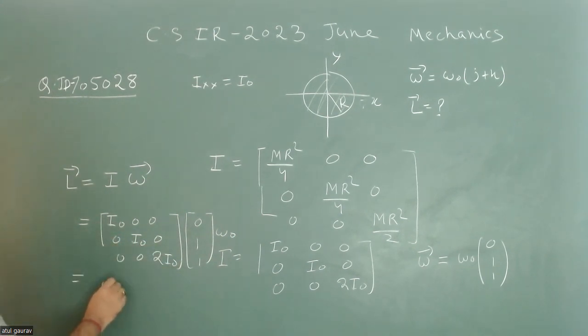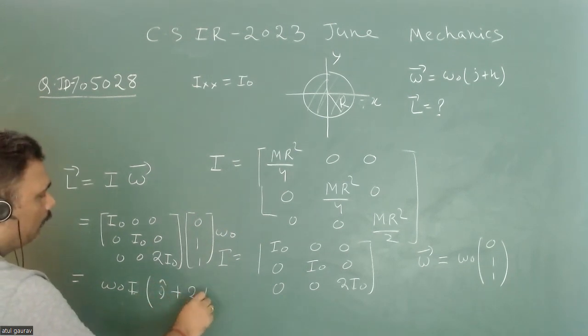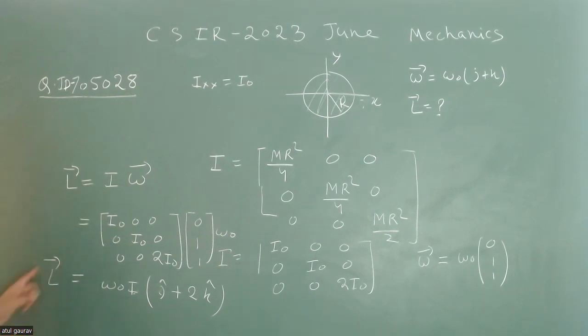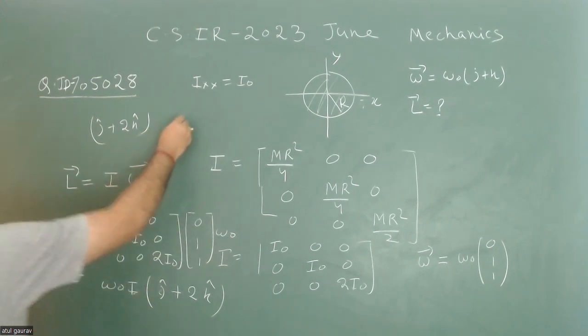This value equals ω₀I₀ times (j cap plus 2k cap). So this is my angular momentum, which is along j cap plus 2k cap direction. I think option 3 is correct.